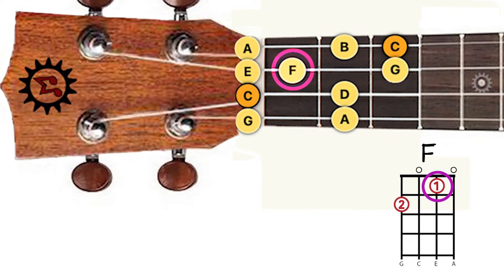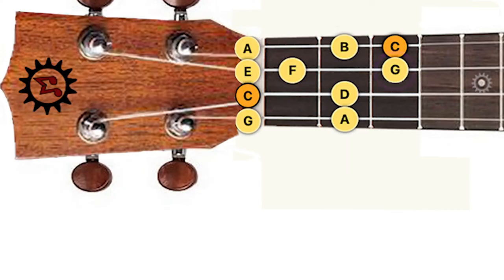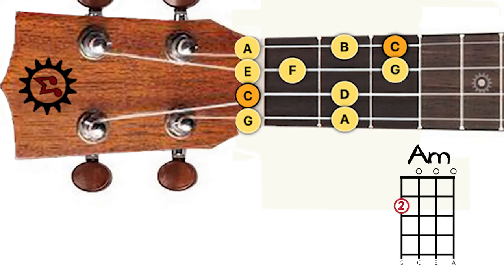Now that I know my F note is here on the 1st fret, that's actually where my finger goes for my F chord. My C chord — 3rd finger, 3rd fret — that is a C note, and there's also a C on the C string. For our G chord, the 3rd fret of the E string is a G, and that's right in our G chord — same as our open G string, the exact same note. For A minor, the 2nd fret of the G string is an A note, same as our open A string.